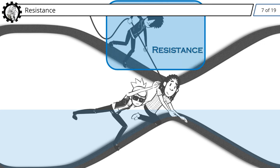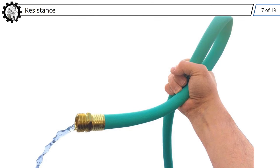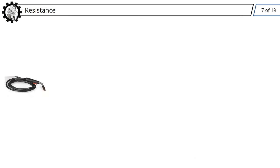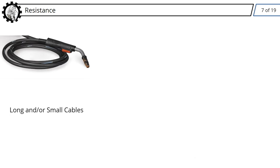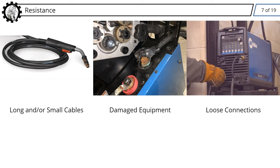Resistance. Resistance is defined as the opposition to current flow. Resistance to electron flow also generates heat. Resistance works like a kink in our water hose. It restricts the flow of electrons, just as the kink restricts the flow of water. Excessive resistance in a welding circuit can come from long and or small diameter welding cables, damaged equipment, or loose connections.